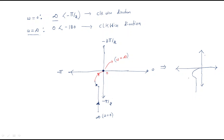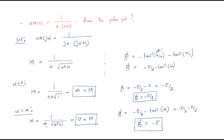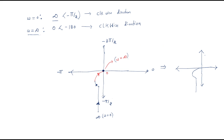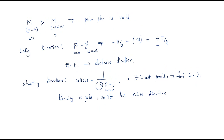In summary, whenever an extra pole is added at the origin, the polar plot direction varies as shown. This is an important result to remember: when a pole at origin is present and the starting direction cannot be determined normally, assume a clockwise direction since the remaining element is a pole. I hope all of you understand this session. Thank you.